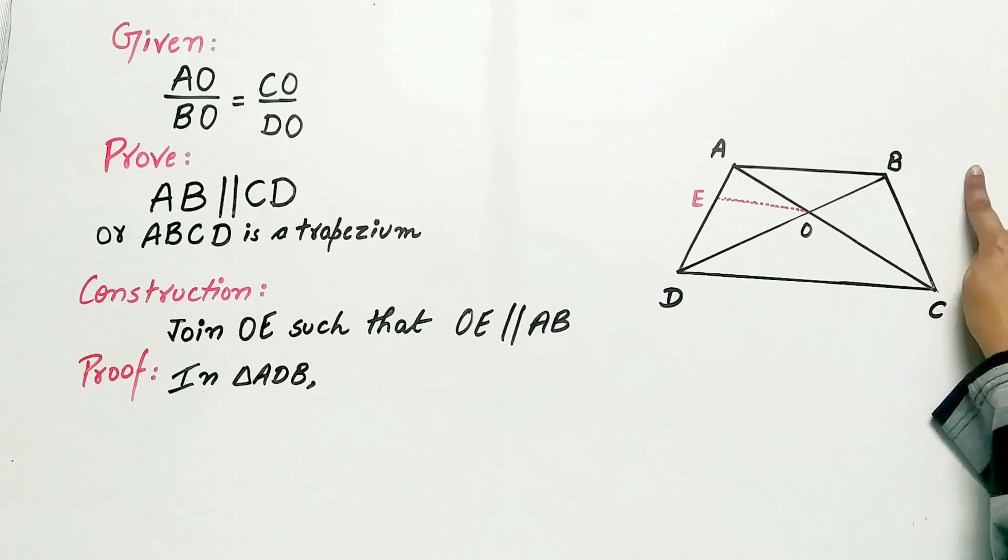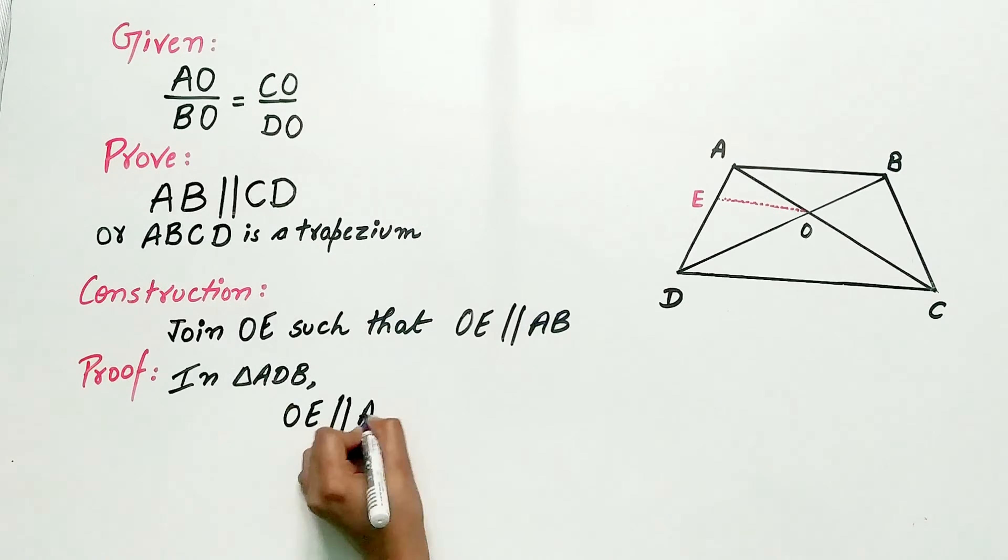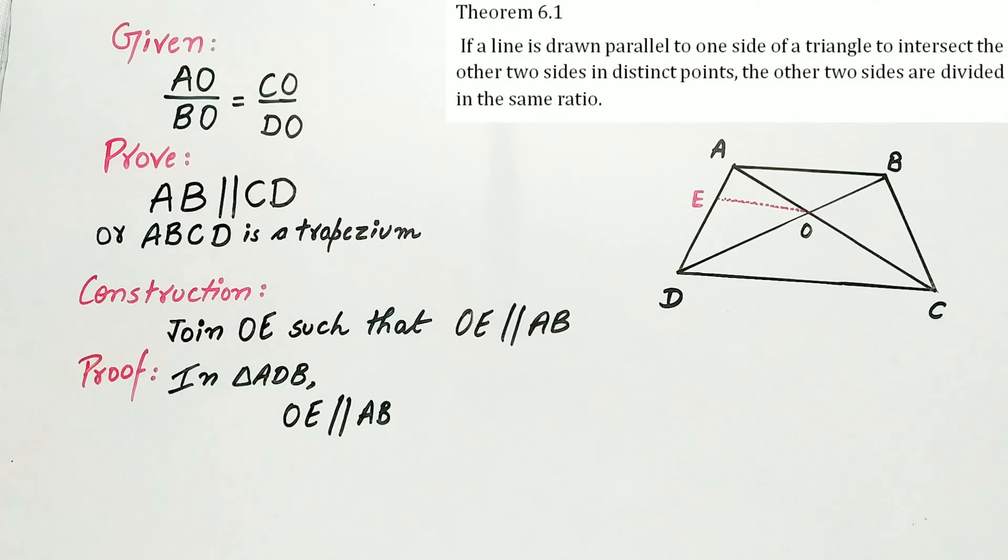Now look carefully, in triangle ADB, OE is parallel to AB by construction. By theorem 6.1 or basic proportionality theorem,